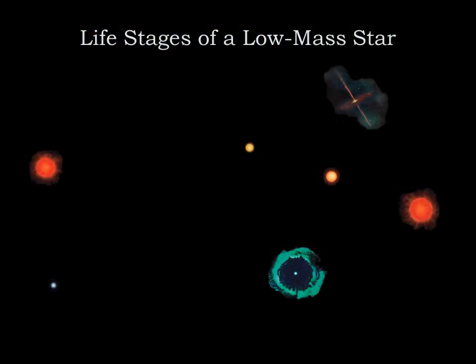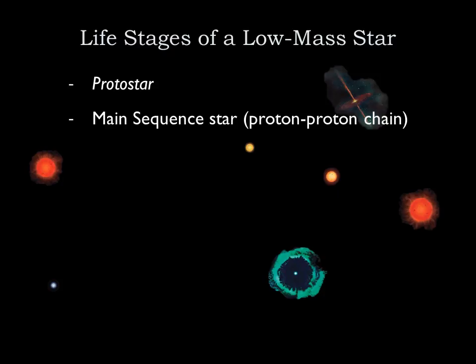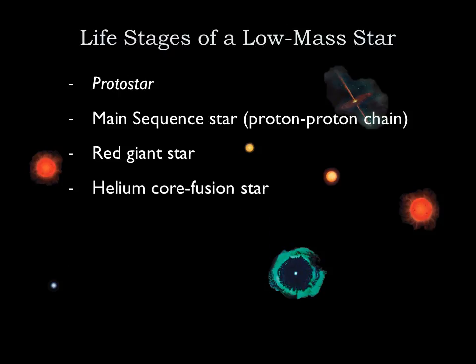In summary, here are the life stages of a low mass star. All stars begin as protostars. When the interior gets hot enough, hydrogen fusion can begin in the core and the star is born. It will spend the majority of its life as a main sequence star until the hydrogen runs out. It then leaves the main sequence, becoming a red giant star with an inert helium core and a hydrogen-fusing shell.